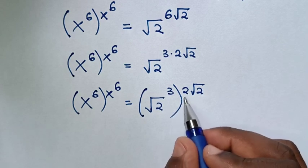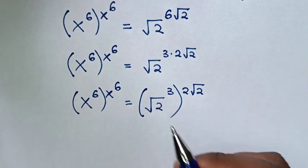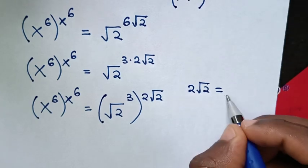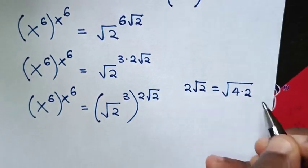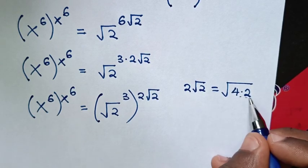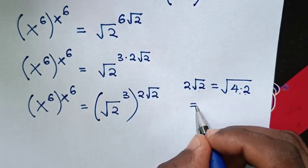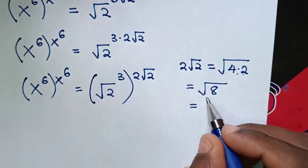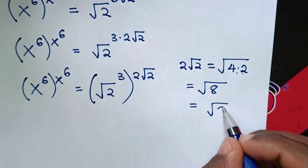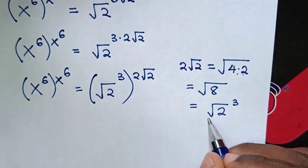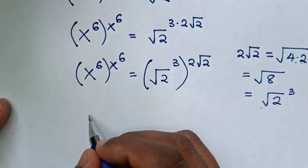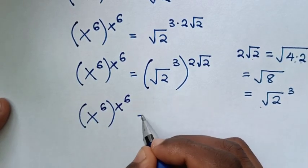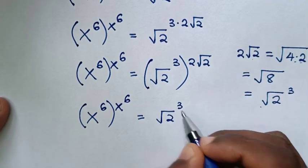From here, 2 square root of 2 is equal to square root of 4 times 2, because square root of 4 is 2, times square root of 2. Then it will be equal to square root of 4 times 2, which is 8, so it equals square root of 8, which is the same as 2 power of 3. We substitute this in, so our equation becomes x power of 6, bracket, power of x power of 6, bracket, power of x power of 6, is equal to square root of 2 power of 3, bracket.